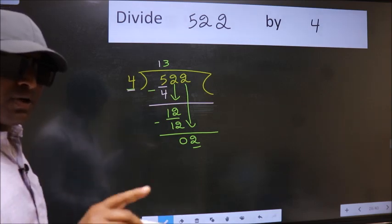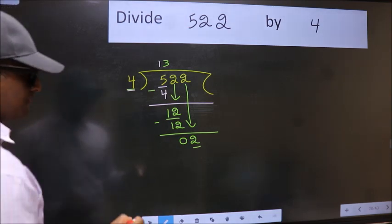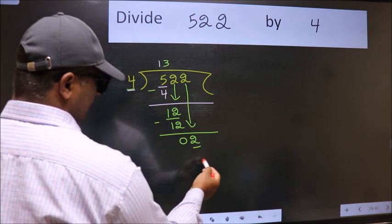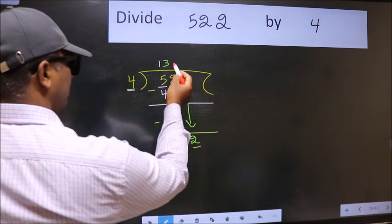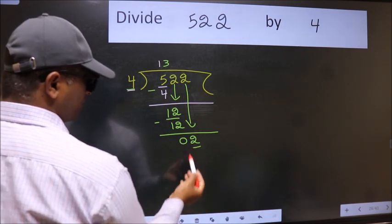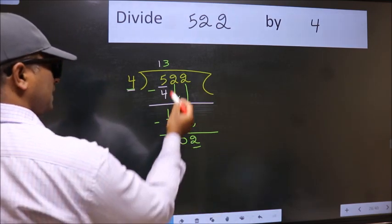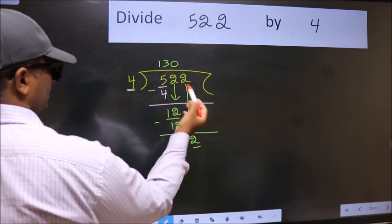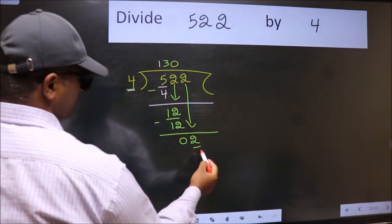Instead of that, what we should think is, which number should we take here? If I take 1, we will get 4. But 4 is larger than 2. So what we do is we take 0 here. So 4 into 0 is 0.